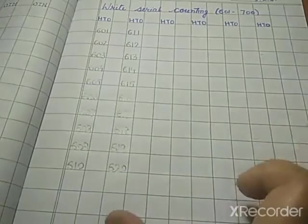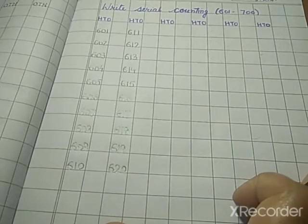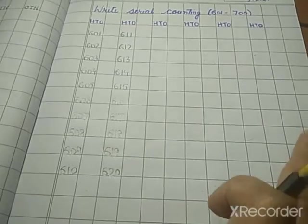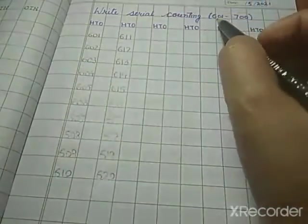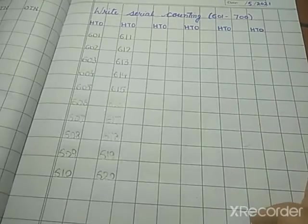Right? So in this way, you will write the numbers neatly in your notebook. Students, complete serial counting from 601 to 700 in your notebook. Thank you.